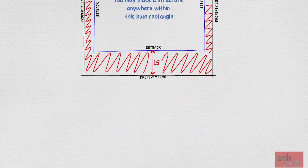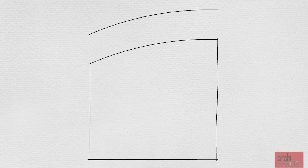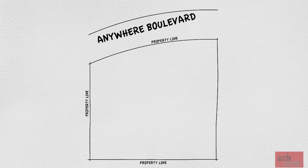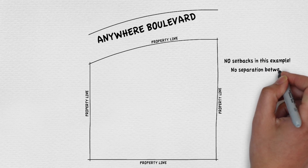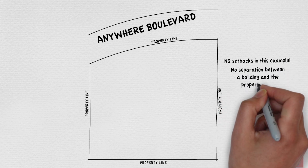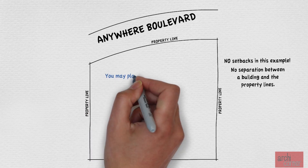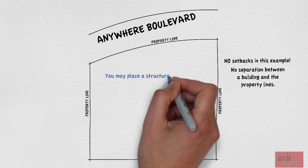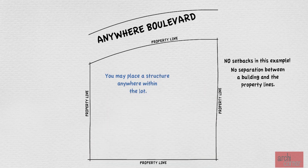As a second example, it is very possible that some properties may have what we call zero lot lines, which means that buildings are not required by zoning to keep any distance separation between the building and the property line because there are no setbacks. In other words, you are not required to have any separation between a building and a property line. Therefore, in this example, you may place a structure anywhere within the lot because there are no setbacks.